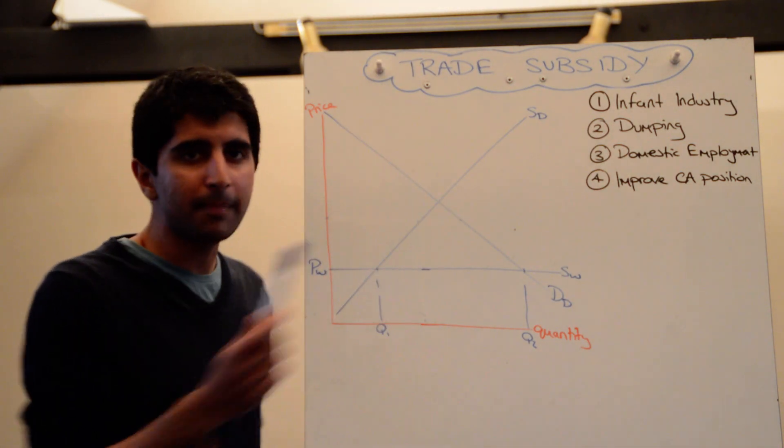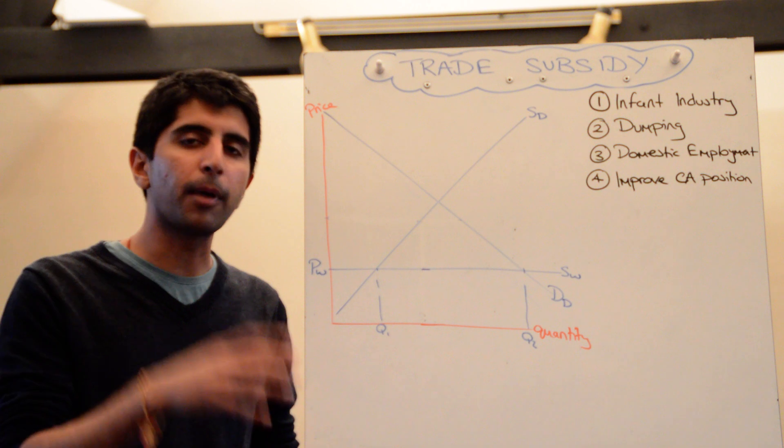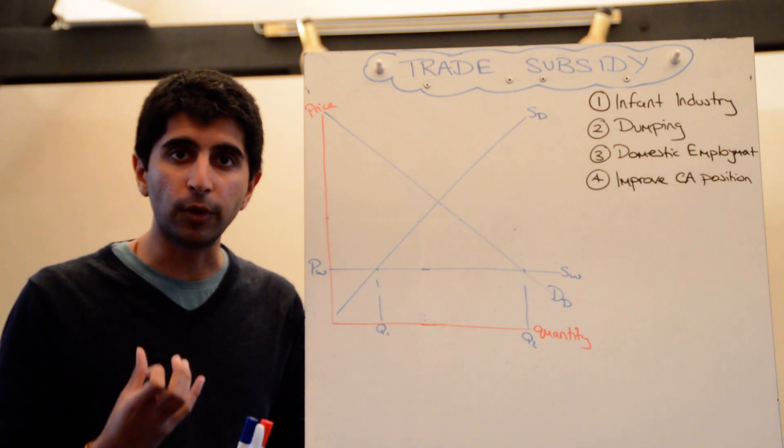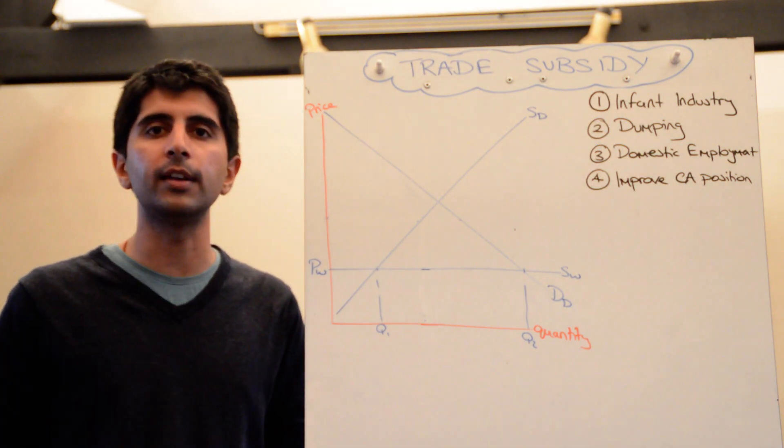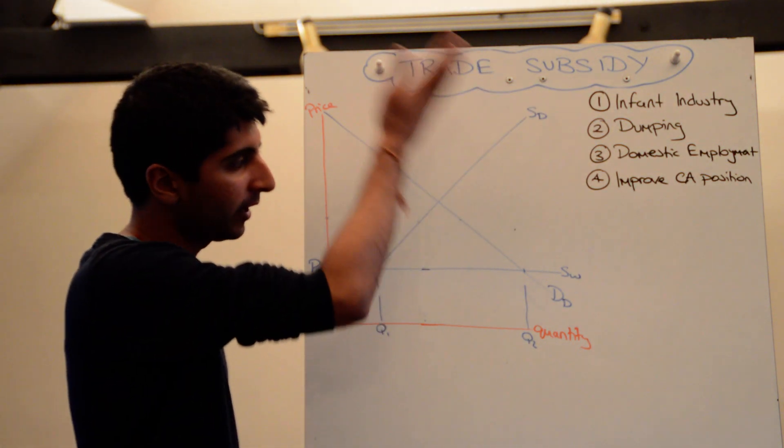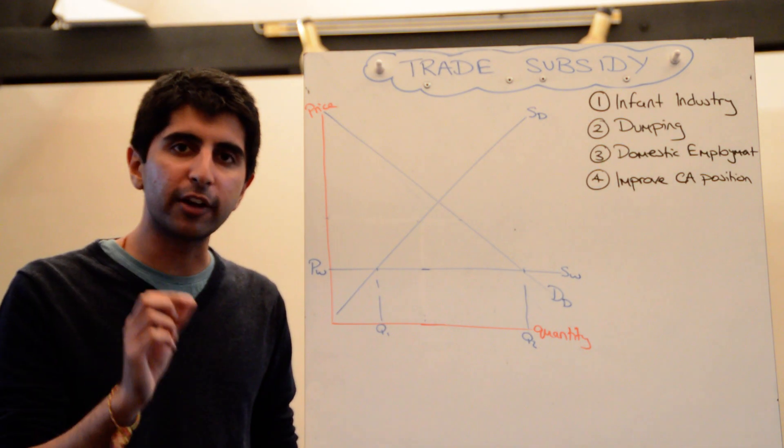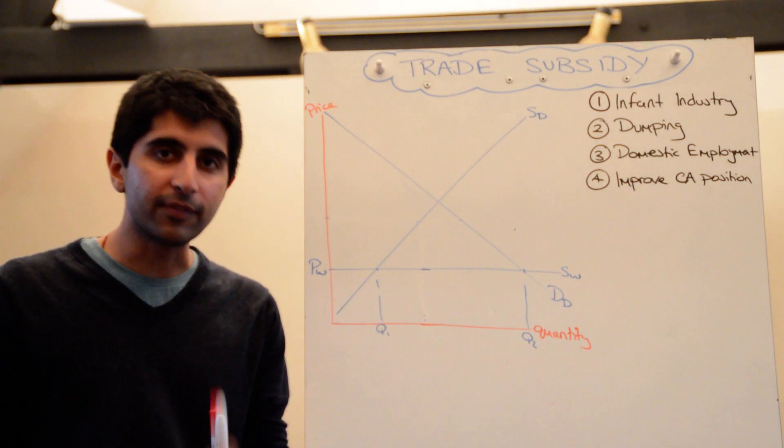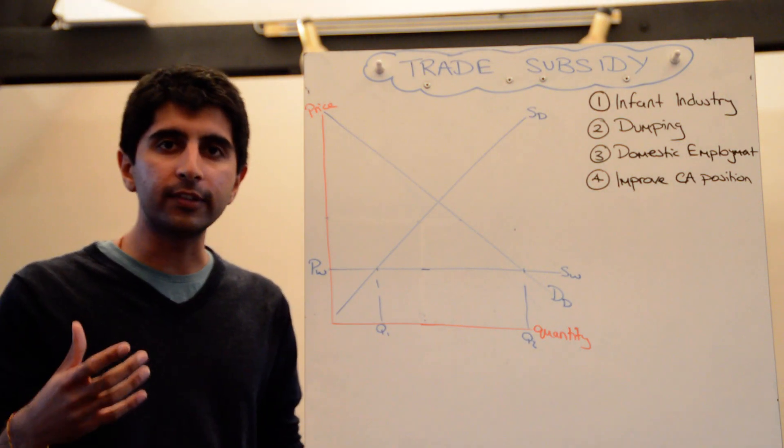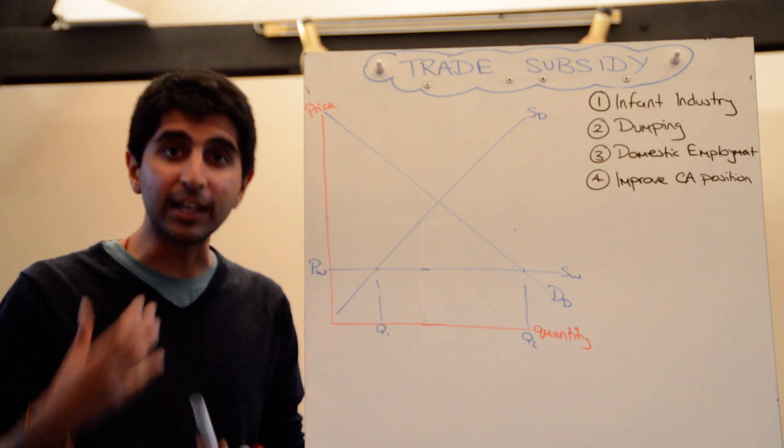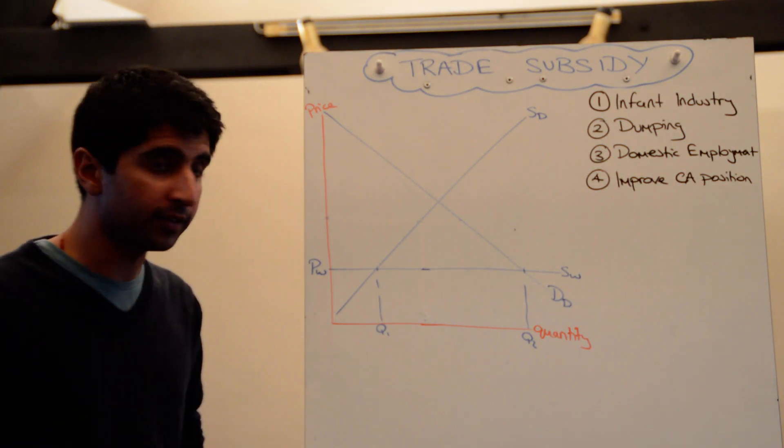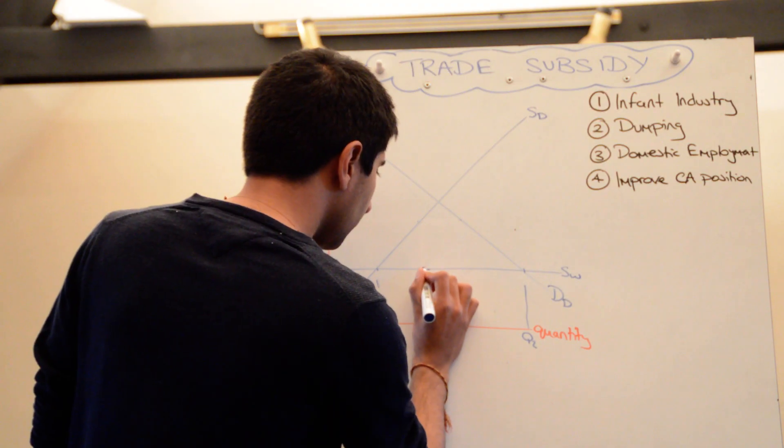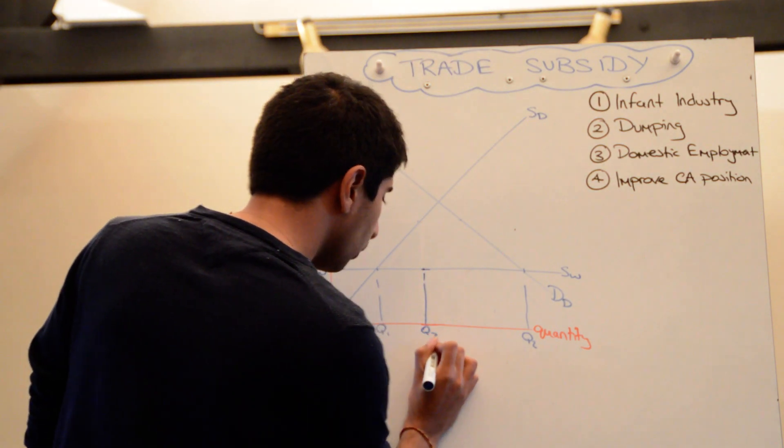So a subsidy given to domestic suppliers. Now you know that when a subsidy is imposed on the market, it's going to shift the supply curve downwards. Because it's given to domestic suppliers here, it's going to shift the domestic supply curve downwards. But it's a very tricky diagram to draw. So this is the way I would do it. Start with a given quantity. Now you know that with this subsidy, domestic supply is going to increase. It's given to domestic suppliers, it's going to increase their supply. So I would start with a quantity value, like that. Let's call it Q3.